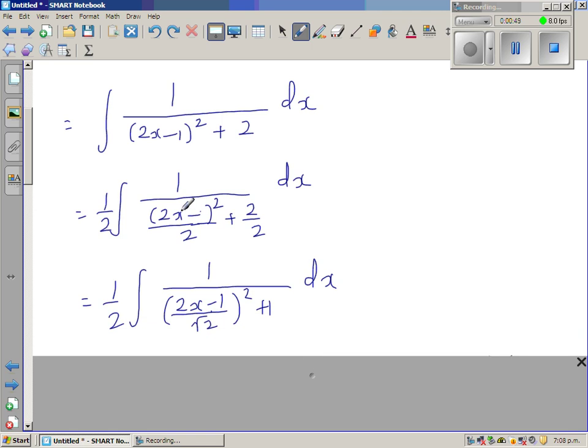And this 2 can be written as square root of 2 the whole squared. And that becomes 2x minus 1 over root 2 the whole squared plus 1.